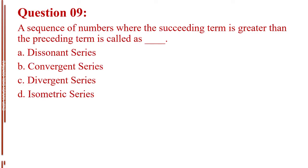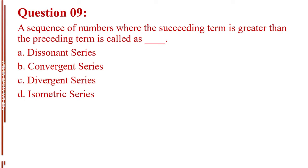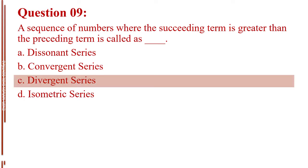Question number nine. A sequence of numbers where the succeeding term is greater than the preceding term is called blank. Letter A, dissonant series. Letter B, convergent series. Letter C, divergent series. Letter D, isometric series. The answer is Letter C, divergent series.